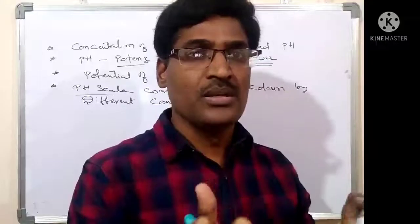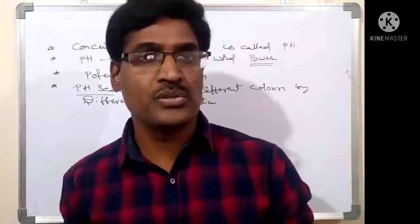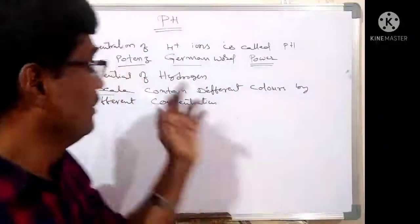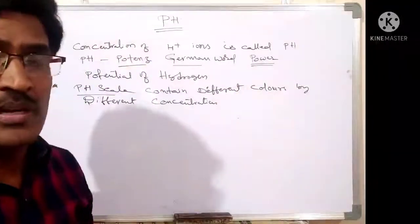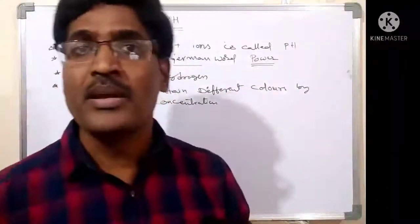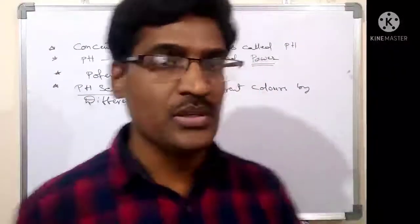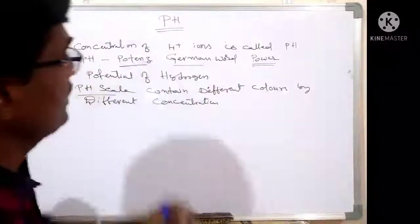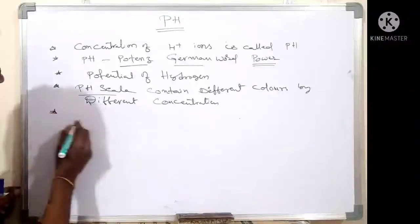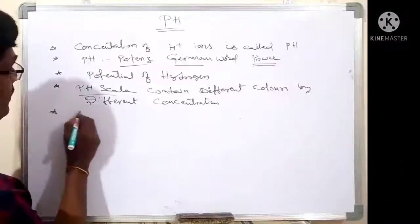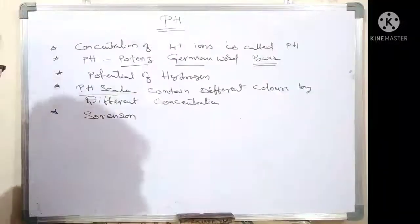As concentration goes higher, different colors show; as concentration decreases, different colors show. Simply, the concentration of H plus ions is called pH. Also, the negative logarithm of H plus ions concentration is called pH — two definitions you have to give. The pH scale was discovered by Sorenson.